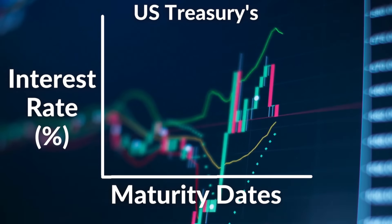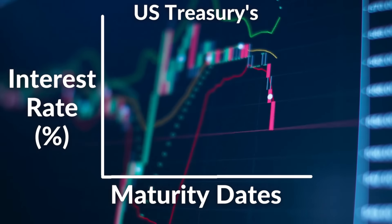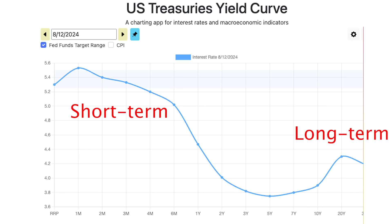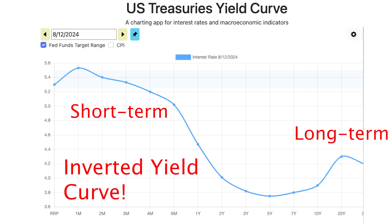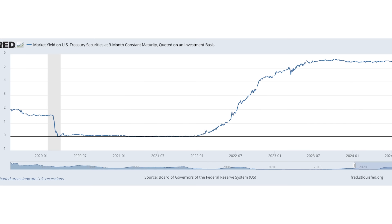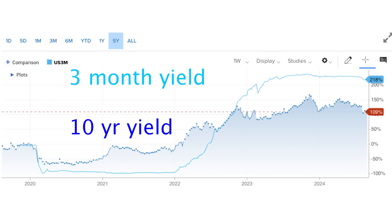If you plot the relation between interest rates and different maturity dates of bonds on a graph in a normal healthy economic environment, you get a positive slope. This graph represents the yield curve at the beginning of 2021. But right now we have an inverted yield curve, where interest rates on shorter term treasury bonds are much higher than on longer term bonds. The only reason this has happened is because the Federal Reserve hiked up interest rates, which directly affect short term loans. Drastic rate hikes tend to result in an inverted yield curve.